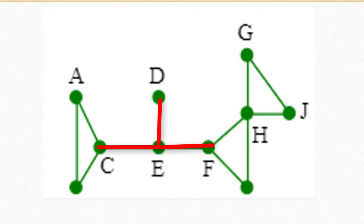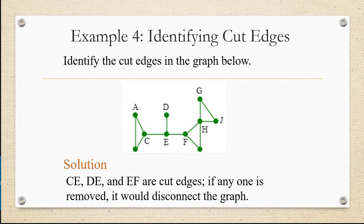This is also the case if EF were removed or if ED were removed. So CE, DE, and EF are all cut edges. If any one is removed, it would disconnect the graph.